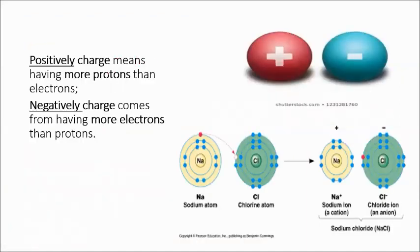Positive charge means having more protons than electrons — the excess subatomic particle is the proton. Negative charge means having more electrons than protons. The process of losing or gaining electrons is called ionization.